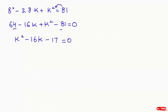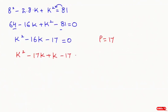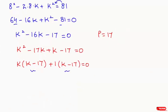I'm going to factorize this equation. We need two factors that multiply to give minus 17 and add to give minus 16k. So I take: k squared minus 17k plus k minus 17 equals 0. Taking k common from the first two terms: k(k minus 17), and taking 1 common from the last two terms: plus 1(k minus 17) equals 0.